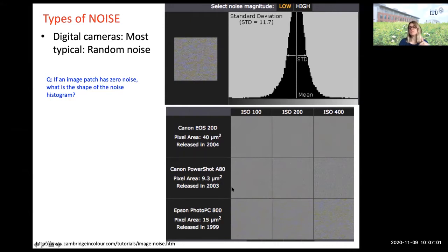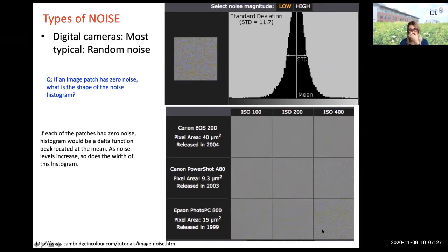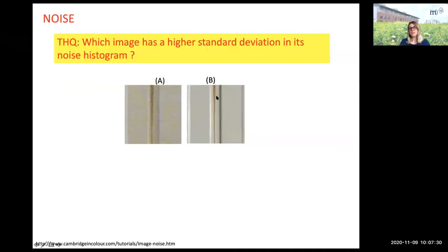Things like shutter speed, aperture, and the amount of light falling affect the noise level. The aperture opening and shutter speed — it tells us how fast or slow the scene is being imaged. You can see the amount of noise increasing in these patches. Which of these image patches has a higher standard deviation in its noise histogram?